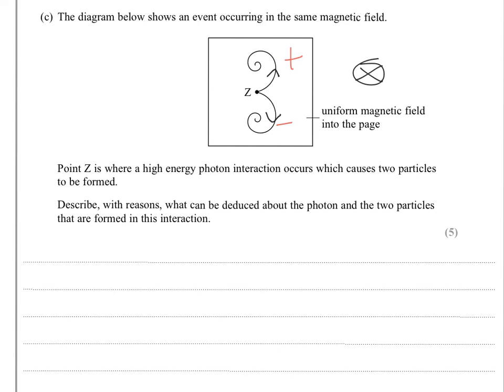So there's actually quite a lot in this question that you need to mention. The ionisation of the charged particles versus the photon which can't ionise. The fact that opposites are produced, which is why we get opposite curves. The curves are symmetrical, so we have the same momentum in both particles, and the fact that there was momentum to the right. So there's a lot going on in this question.